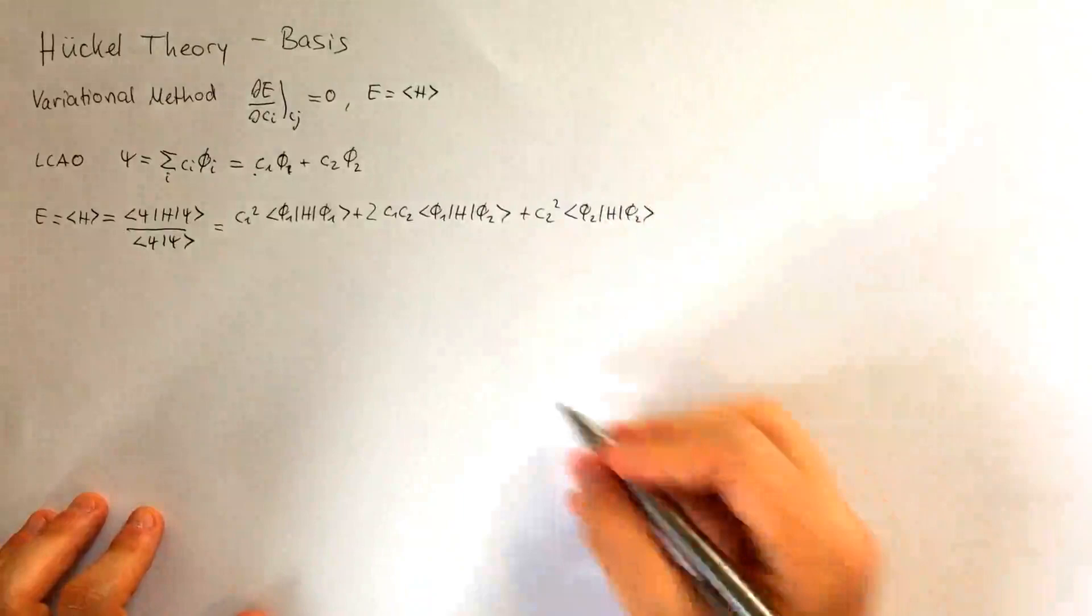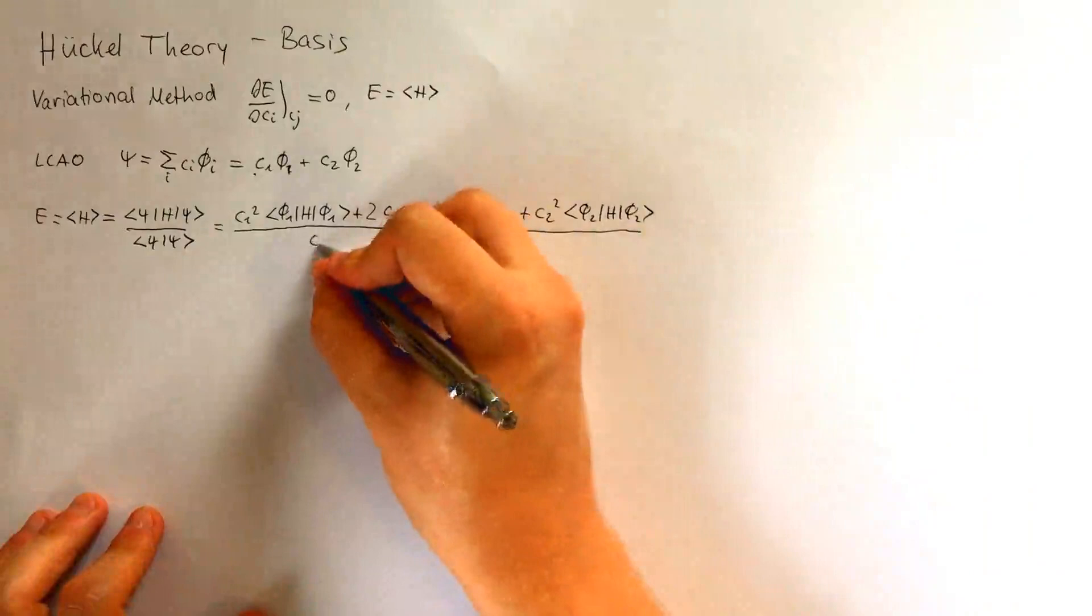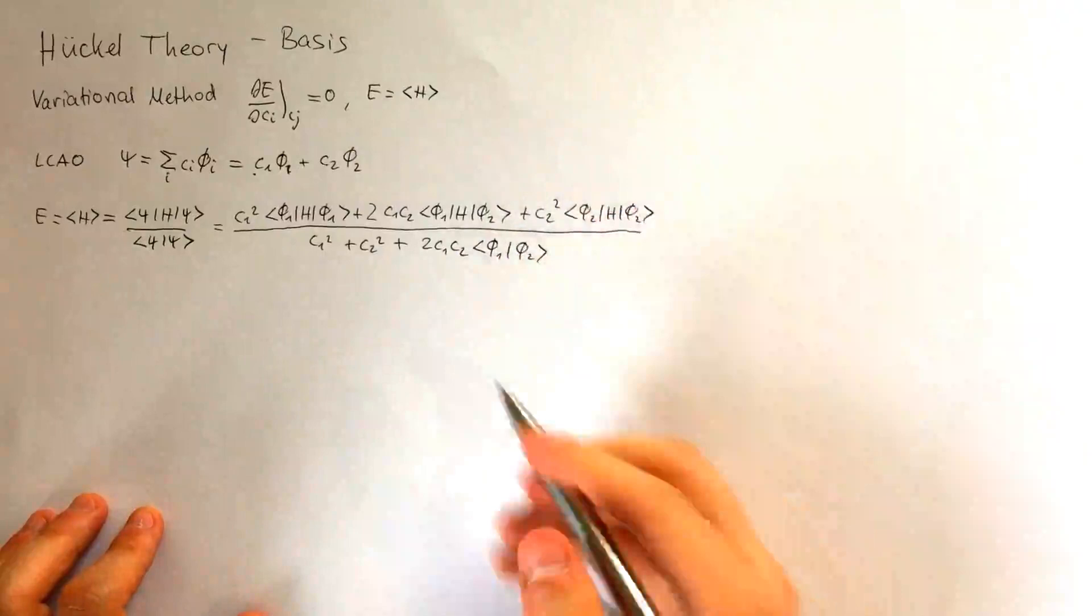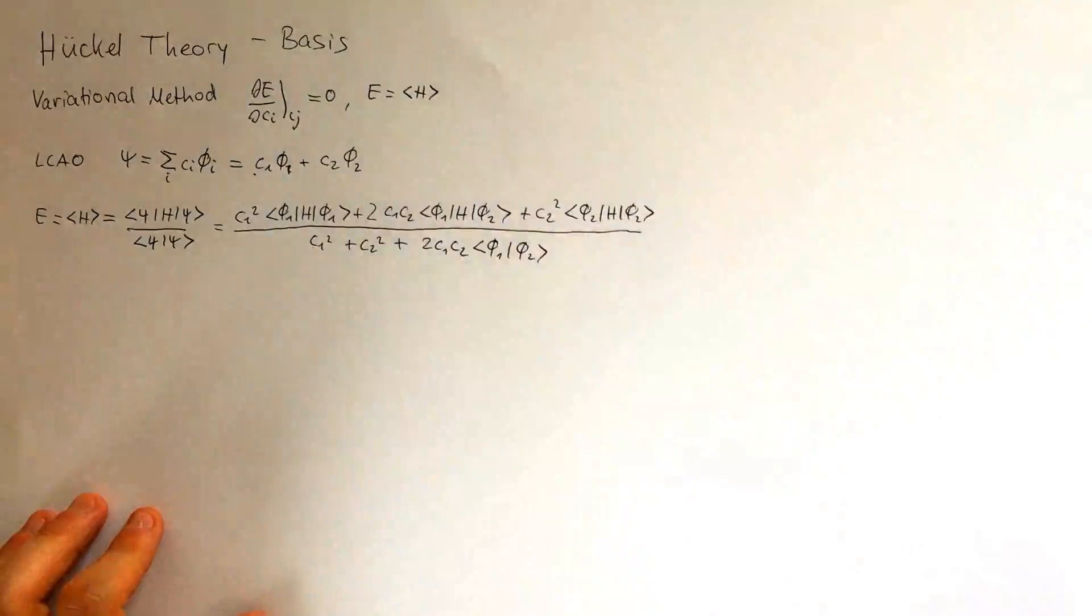phi 2 H phi 2, and all of this has to be divided by C1 squared plus C2 squared plus 2 C1 C2 phi 1 phi 2. Here for these terms, I assumed that phi 1 and phi 2 are normalized.